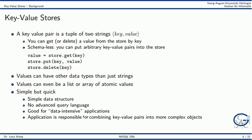A key value store stores key value pairs. A key value pair is a tuple of two strings where the first part is the key and the second part is the value. You can access or delete a value by its key. Key value stores are schema-less. You can put arbitrary binary strings as the value part. The three basic operations that a key value store offers are get, put and delete.